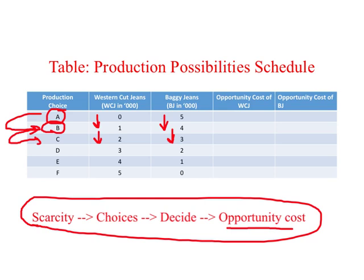Consider two major scarce resources: money and time. For example, say you are watching this video between 10:00 and 10:15 in the morning. During this 15-minute period you have a scarcity of time. Because of that scarcity, there are a number of things you could do — watch this lecture video, watch television, or take a shower. If you decide to watch this lecture video, what you are giving up is the pleasure of watching television or taking a shower — that is your opportunity cost.